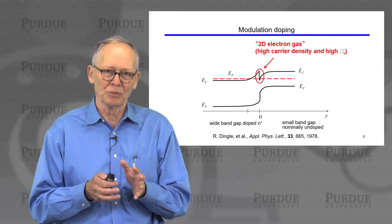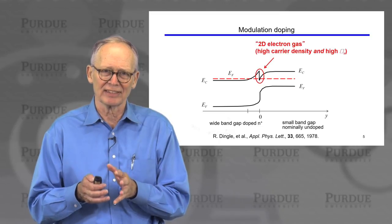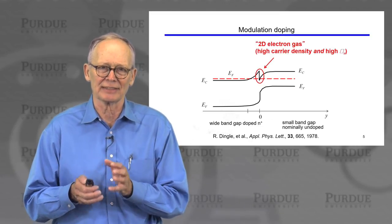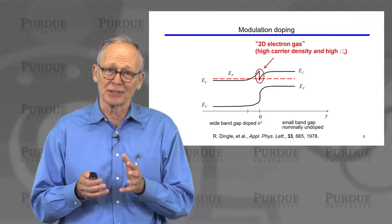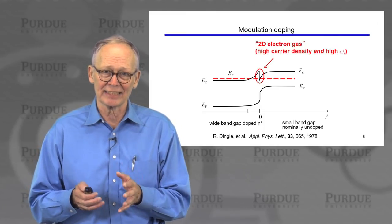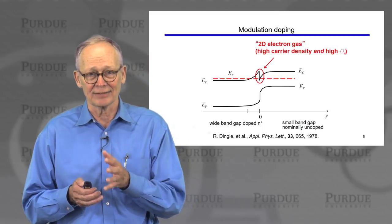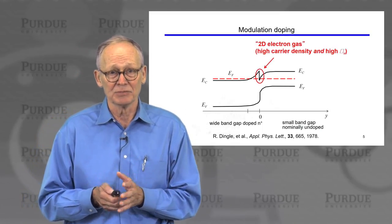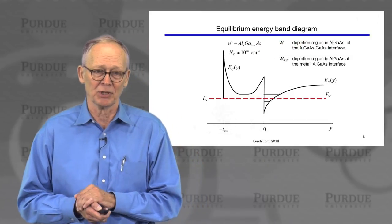Although HEMT devices refer to electrons here not as an inversion layer but as a two-dimensional electron gas, the electrons in a MOSFET are also in a 2D electron gas — the potential well at the oxide-silicon interface quantum mechanically confines them. So the physics is very similar to what we see in a MOSFET.